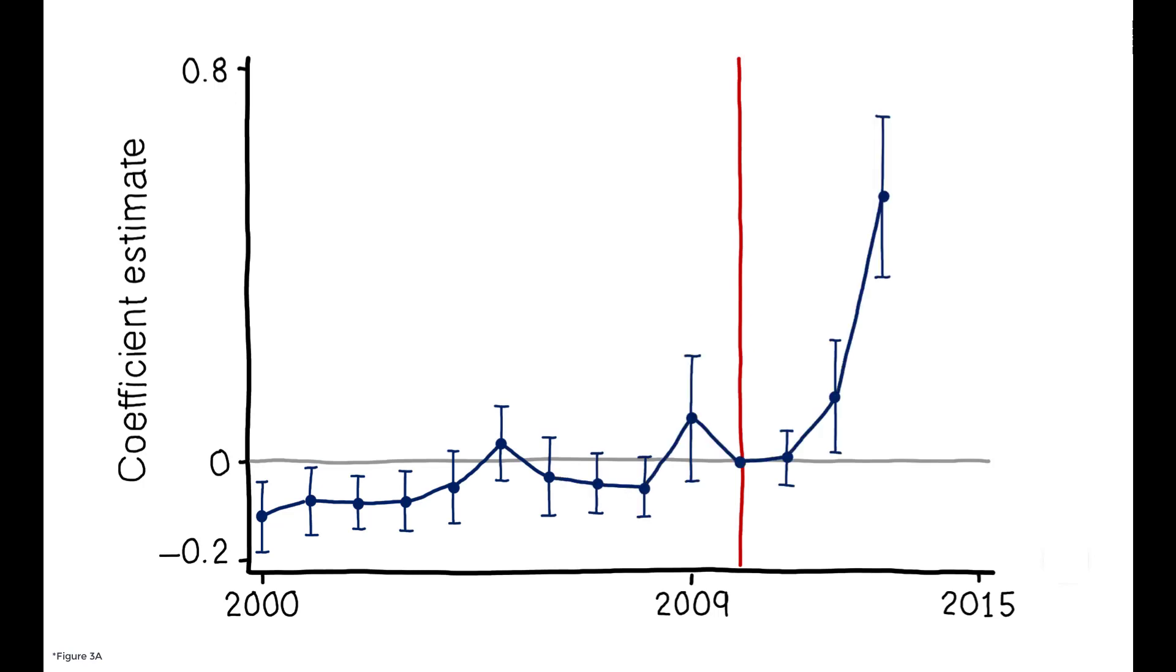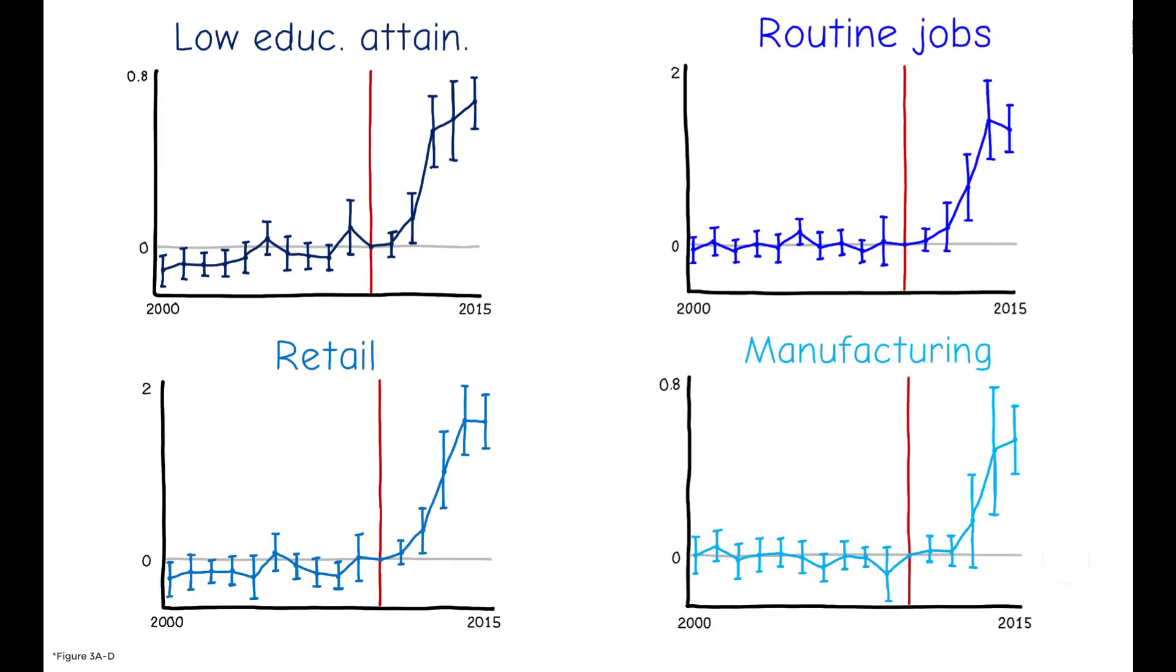Starting in 2010, however, this correlation suddenly becomes much stronger. Moreover, we see the same patterns if we look at the share of an area's working age population employed in routine jobs and the share employed in retail and manufacturing.